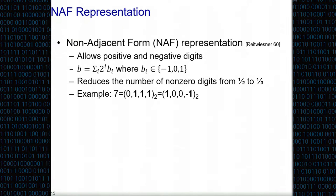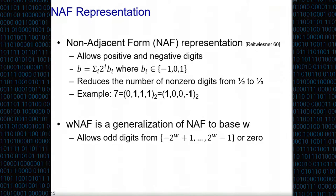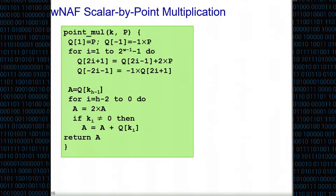That's known as NAF representation. The w-NAF representation is generalization to base w. In this case, we allow digits in the range of minus 2^(w-1) to 2^(w-1) or zero digits. Let's see how the scalar by point operation is actually implemented.